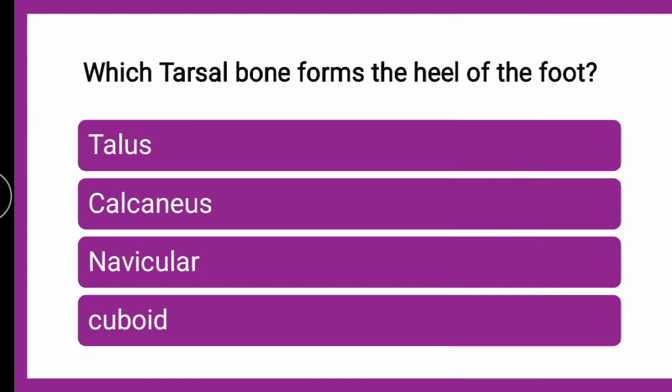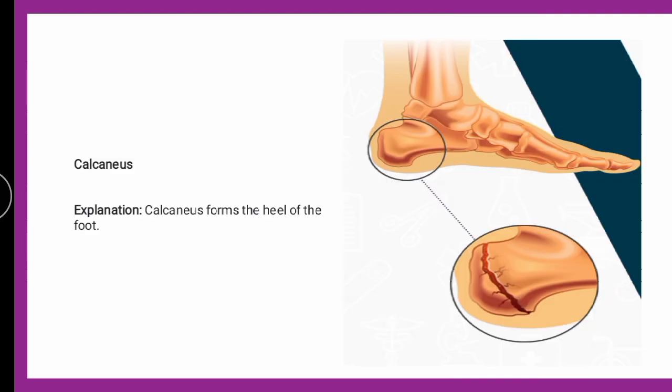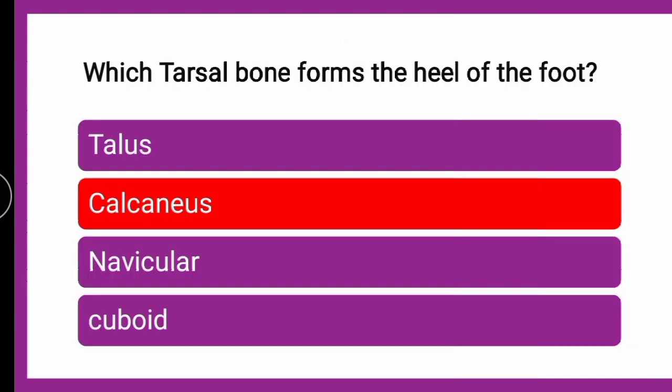The next question is: which tarsal bone forms the heel of the foot? The options are talus, calcaneus, navicular, or cuboid. The correct answer is calcaneus. The calcaneus is the tarsal bone that forms the heel of the foot, as you can see in the image.